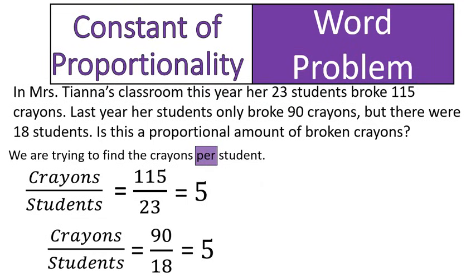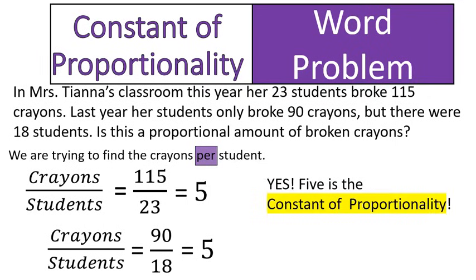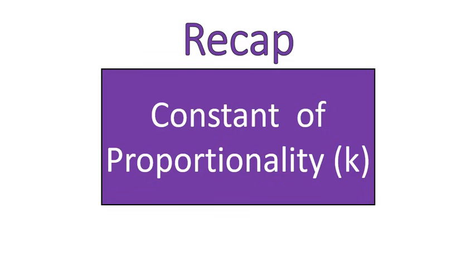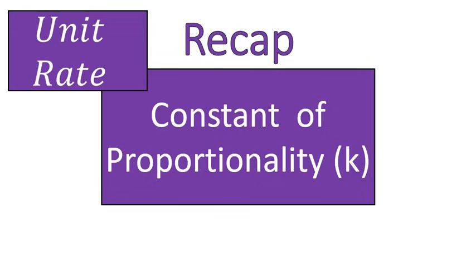90 divided by 18 is also equal to 5. So the answer to this question — is it a proportional amount of broken crayons? — is yes. Five is the constant of proportionality, also called the unit rate. We talked about the constant of proportionality, which is also often called the unit rate, discovered using this equation. I hope that lesson was helpful for you. Have a wonderful day.